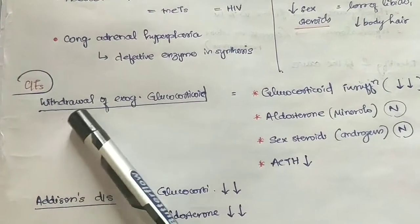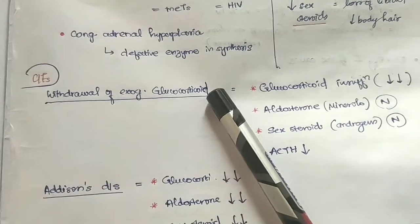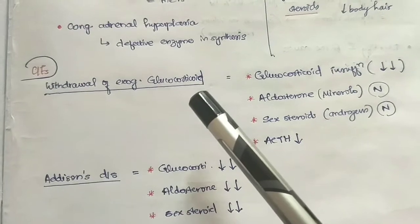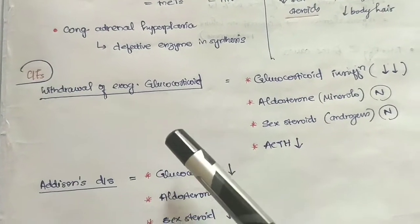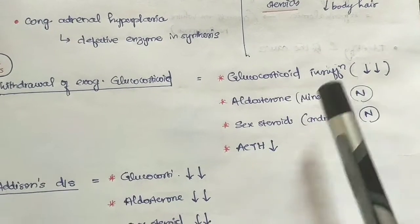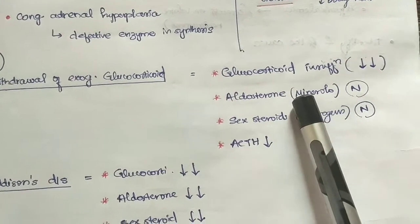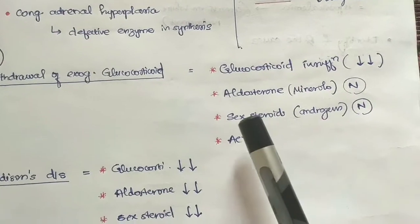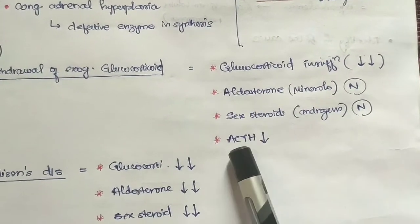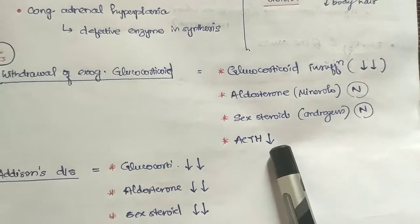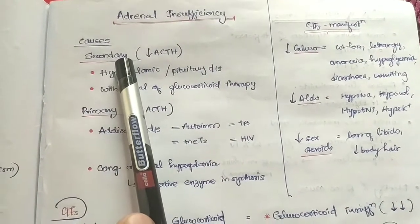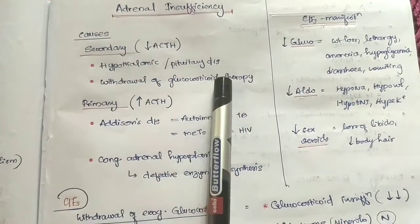In secondary causes such as withdrawal of exogenous glucocorticoids, there is a decrease in glucocorticoid levels. However, aldosterone — that is, mineralocorticoids — and sex steroid levels, including androgen levels, are normal. The ACTH levels are lesser in secondary causes.